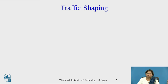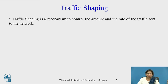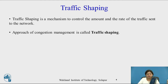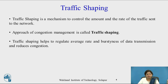Let me explain a very important topic of congestion control, that is, traffic shaping. Traffic shaping is the mechanism to control the amount and the rate of traffic sent to the network. This approach of congestion management helps to reduce the average rate and burstiness of data transmission, thereby reducing congestion.